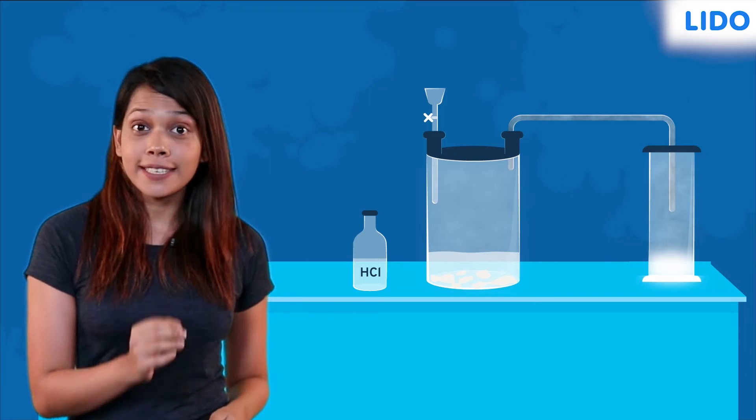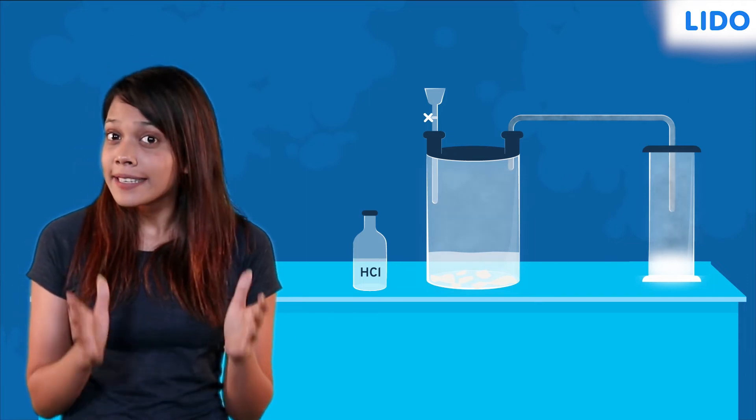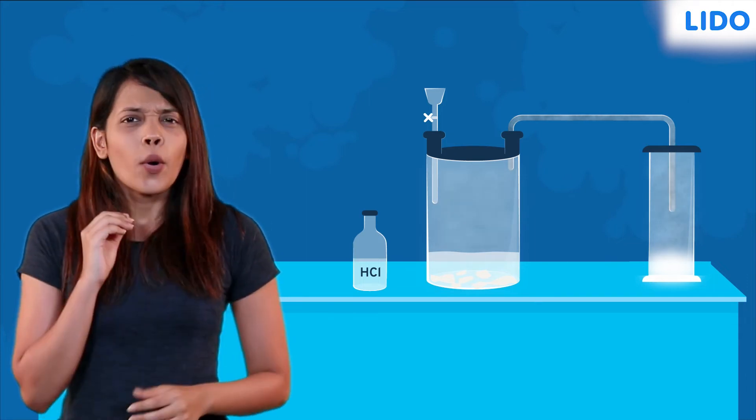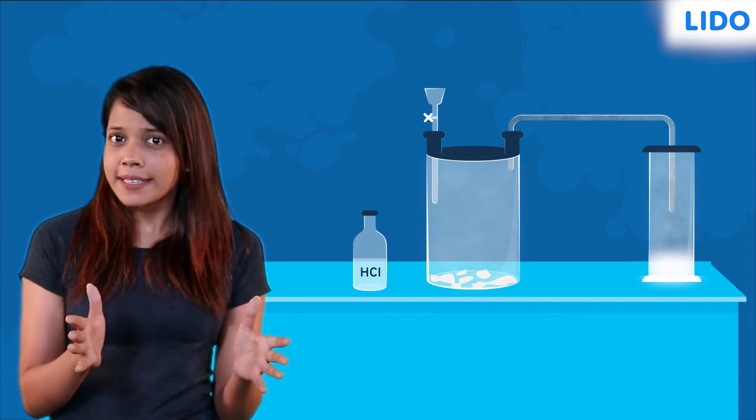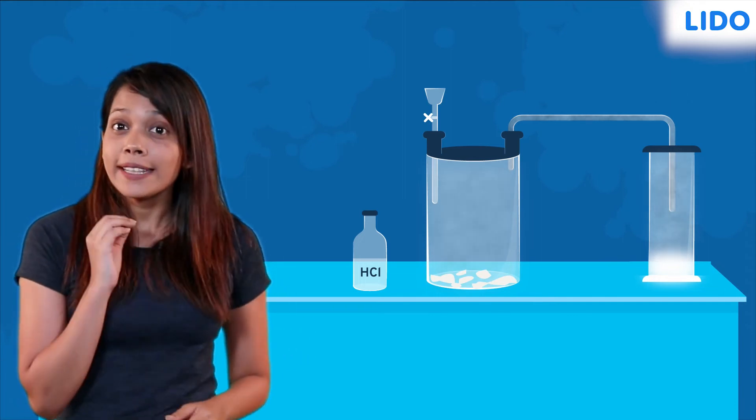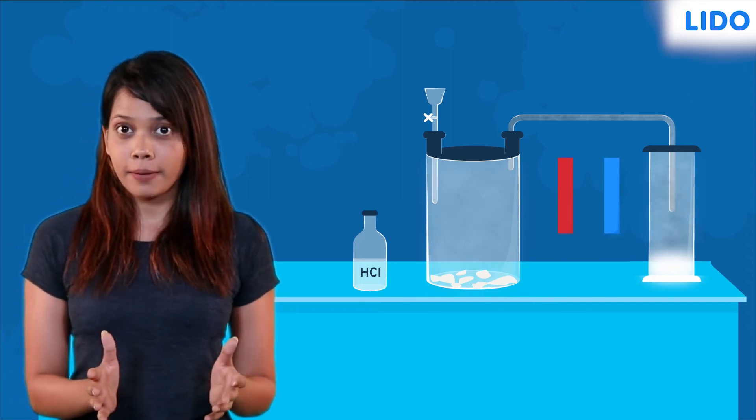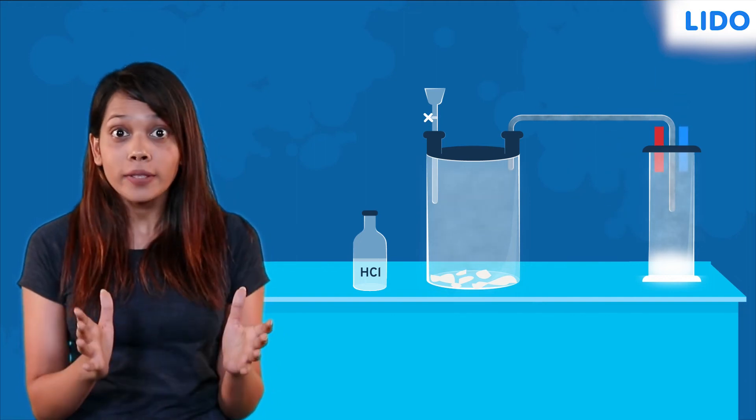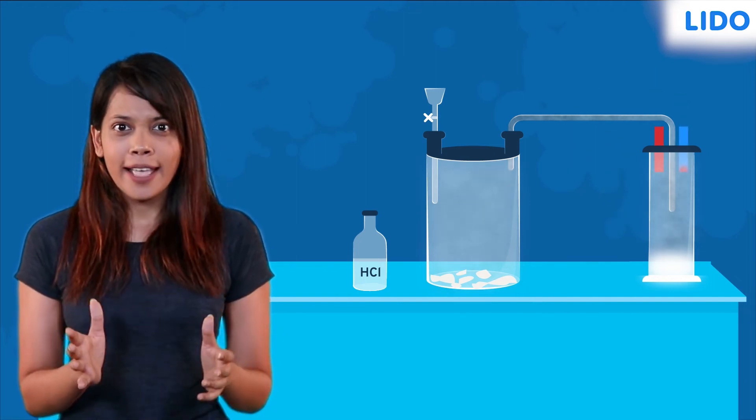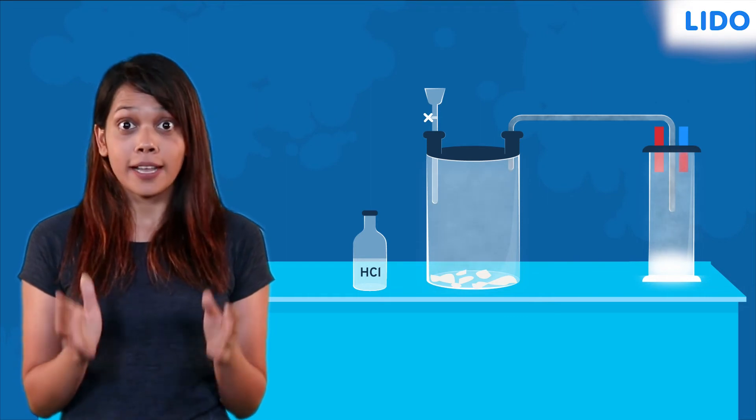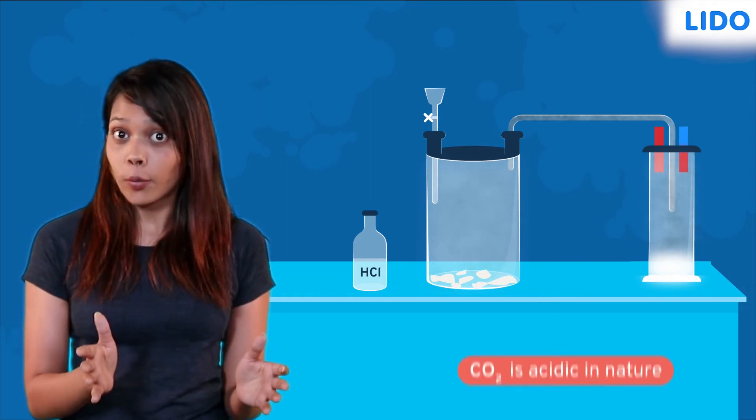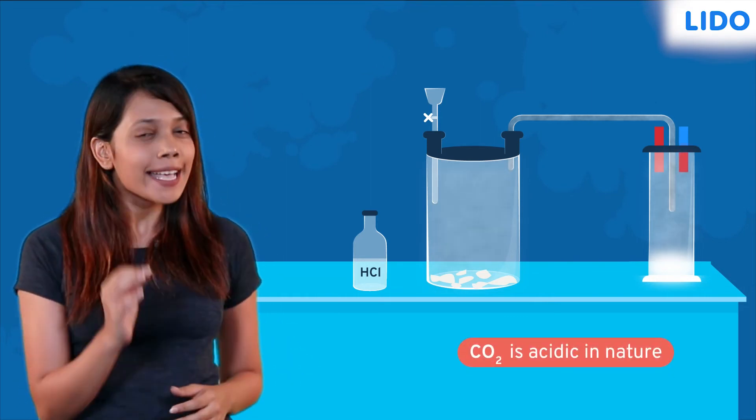Now that we are done collecting the gas, let us check the nature of it, whether it is acidic, basic or neutral. We will take the red and blue litmus paper, moisten them and hold them over the gas jar. Since the blue litmus paper turned red, we know that carbon dioxide is acidic in nature.